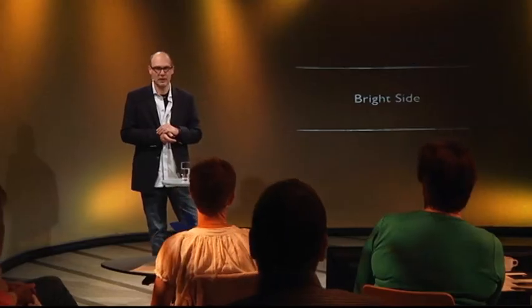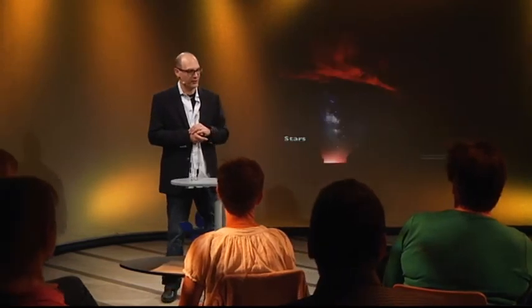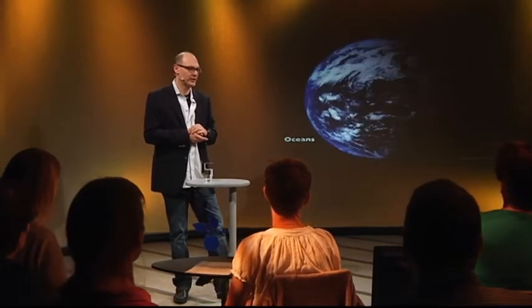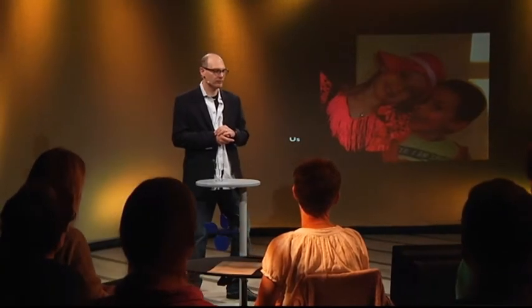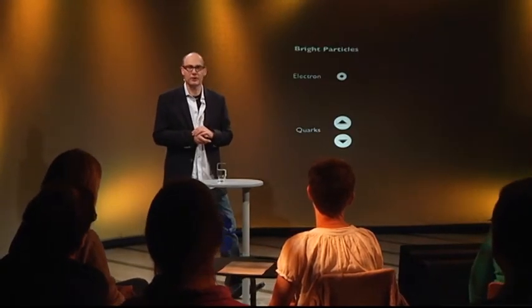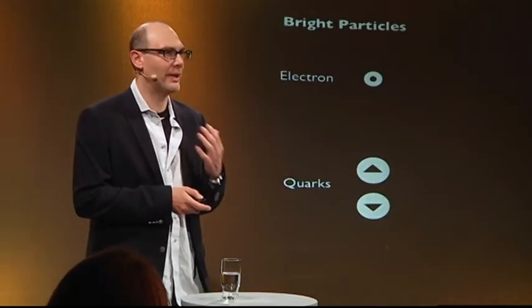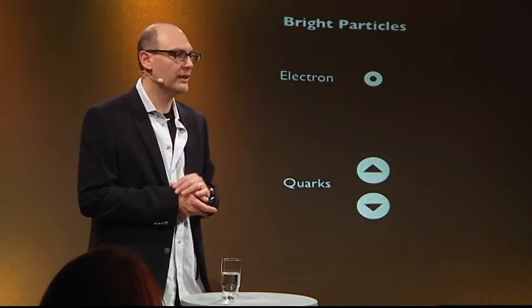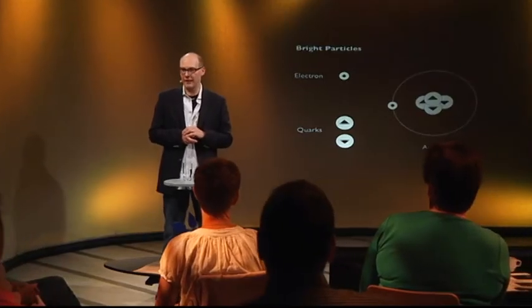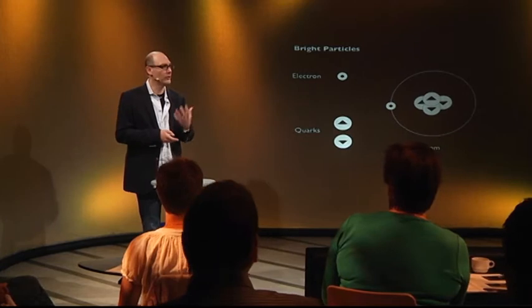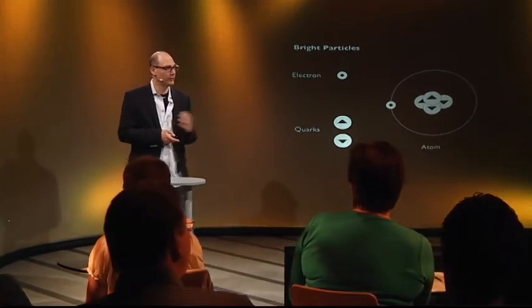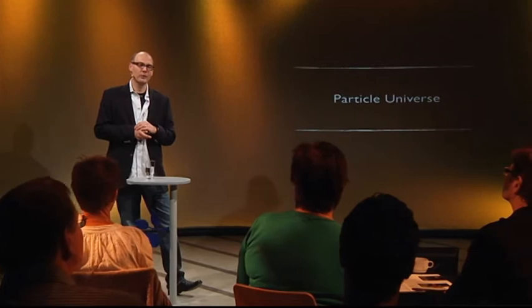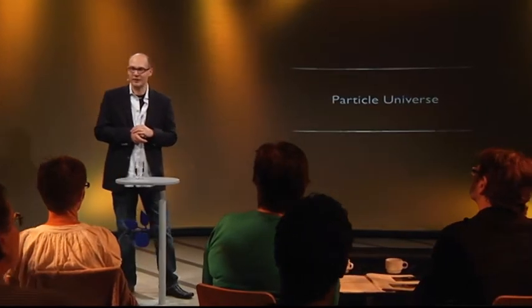In order to understand the dark side of the universe, we have to first have a look at the bright side. Stars, planets, oceans, us — are made by the same elementary constituents, the bright particles. The particles shine light. Putting together the electron and quarks, you can form atoms, and those are the building blocks of all the things you have seen before. We could call this the particle universe.